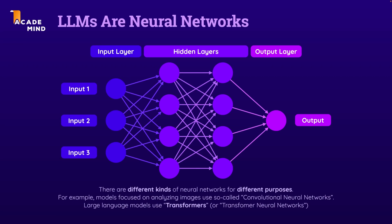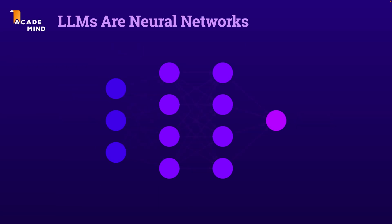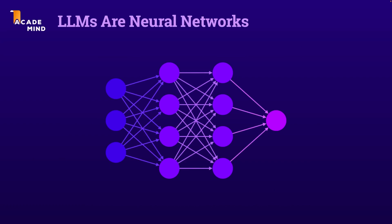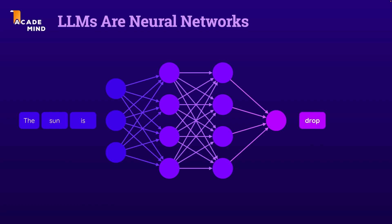The idea behind such a large language model neural network is that in the end you train this network, this model, such that for given inputs — for given text — it produces outputs, words, that form logically sound sequences of words. And this is done through a very long iterative training process where words are fed in and outputs are then compared to the input words to see if the overall sequence makes sense.